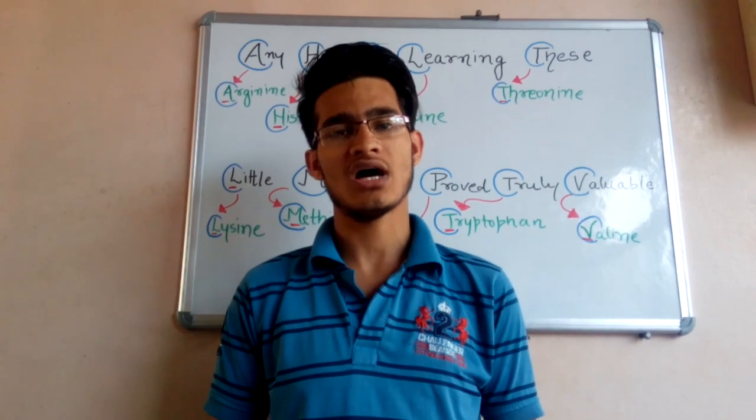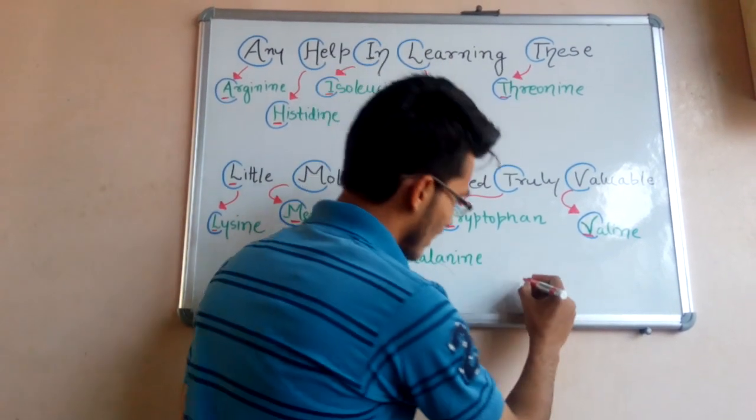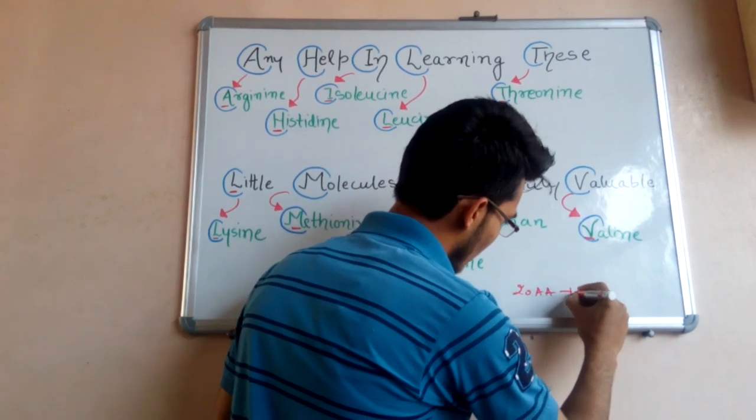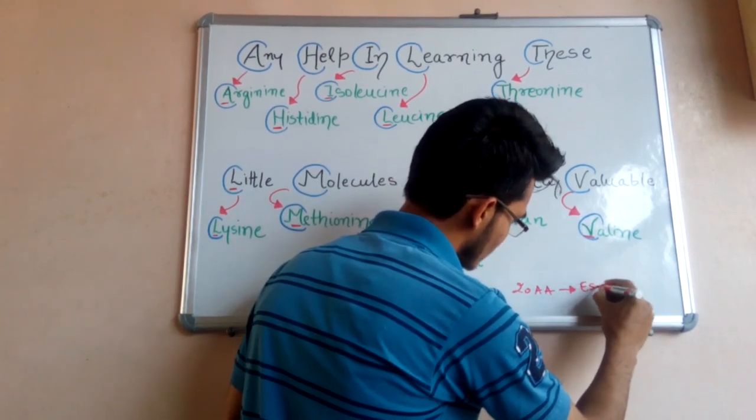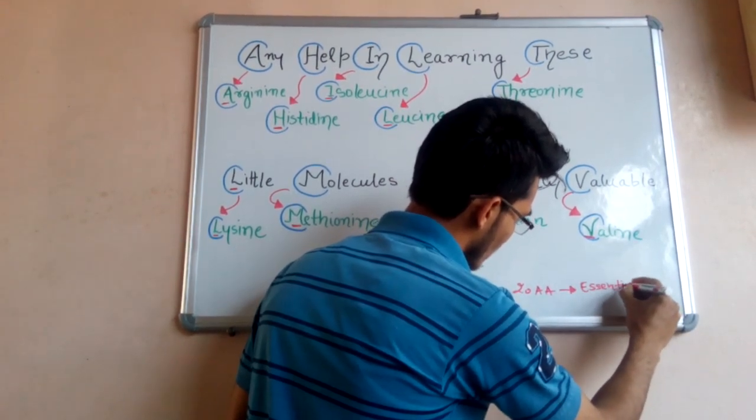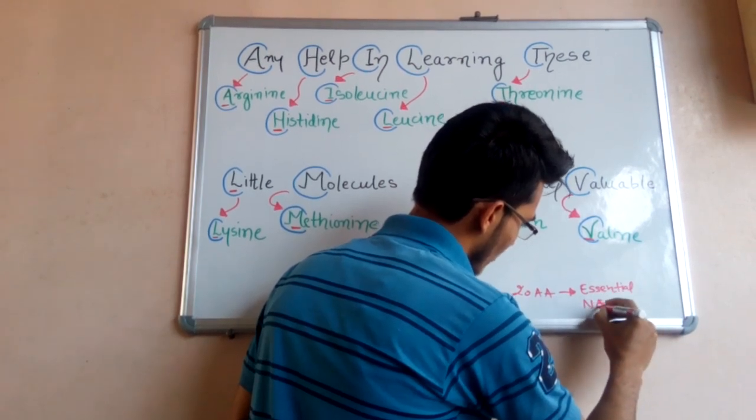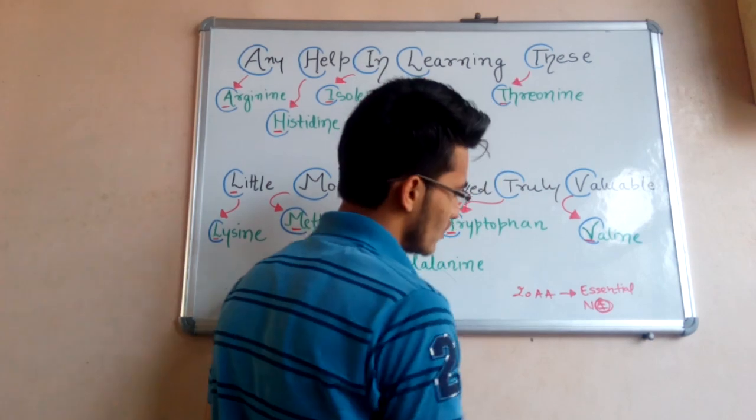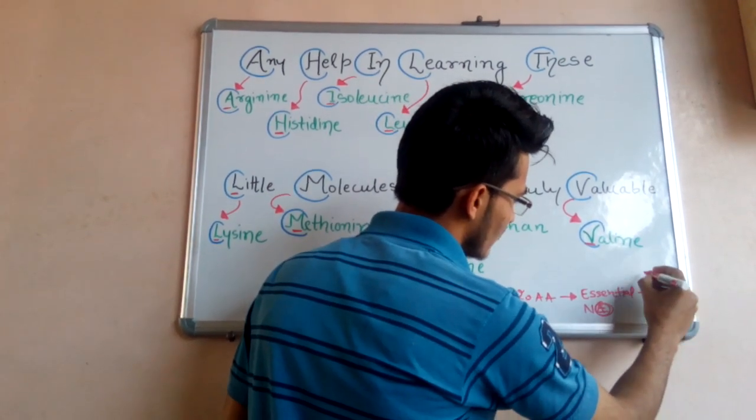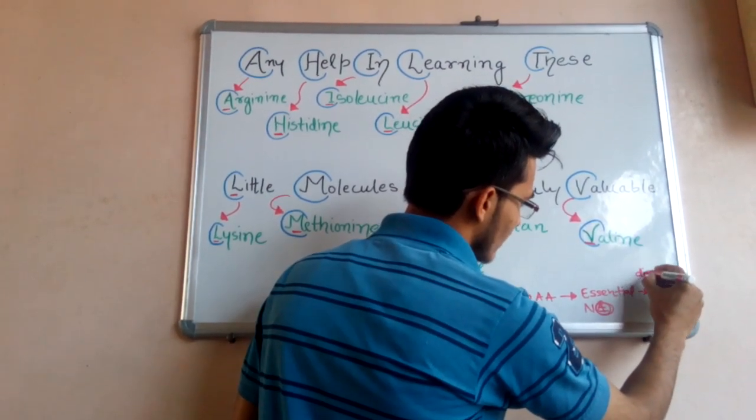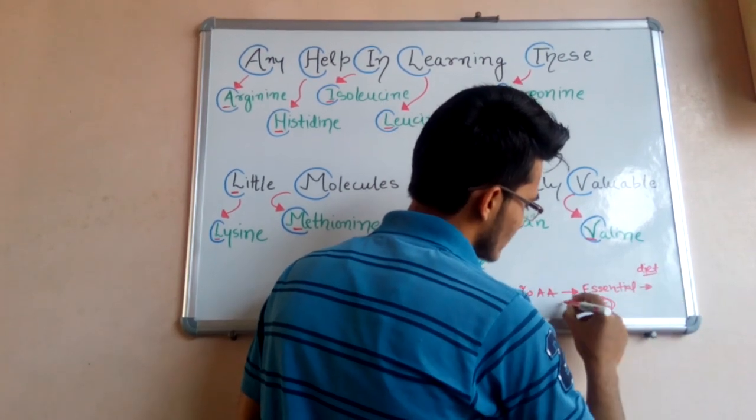amino acids present in our body. Among these 20 amino acids, ten are essential and ten are non-essential amino acids. The 10 essential amino acids must be required by us in diet, and the 10 non-essential